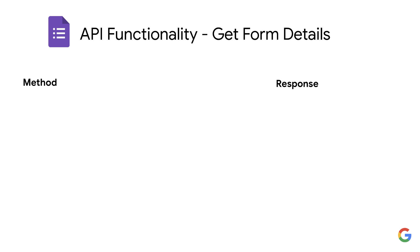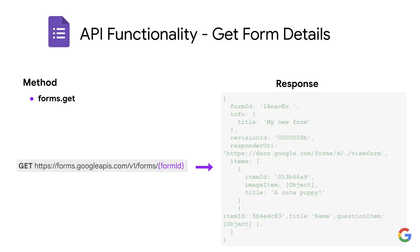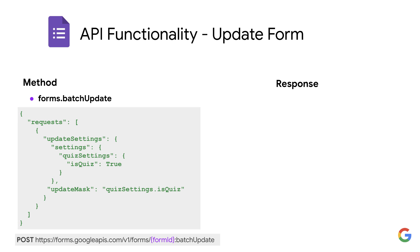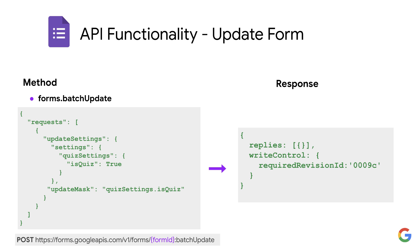A next method to try can be forms.get. It uses an HTTP GET with a form ID included in the URL, and the response will contain details about the requested form. One of the most used methods is forms.batchUpdate. It allows for creating and editing of both form settings and form fields using an HTTP POST with a JSON body specifying the update details. Here's an example of updating a form to be a quiz, and the response will contain details about the update.